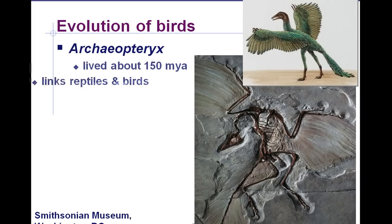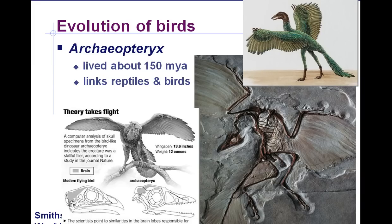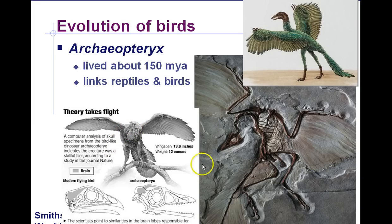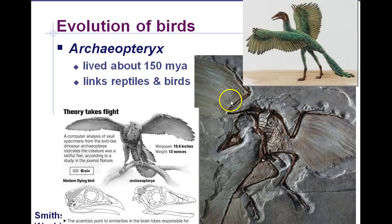We also have transitional fossils for a variety of different forms. The Archaeopteryx lived about 150 million years ago during the time of dinosaurs. This is a transitional fossil linking reptiles to birds — it has features of reptiles, including similar bone structures and teeth rather than a beak. However, it also has feathers, and it is thought to be a missing link between reptiles and birds.